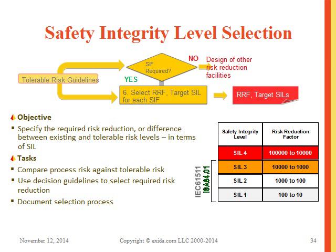The objective of the safety requirement specification is to specify the required risk reduction — the difference between existing and tolerable risk levels in terms of SIL. The tasks are to compare process risk against tolerable risk, use decision guidelines to select the required risk reduction, and document the selection process. For all safety instrumented functions defined, specific information must be documented: specific conditions sensed, actions to be taken, timing, maintenance and bypass requirements, and any special requirements needed to properly reduce the risk.